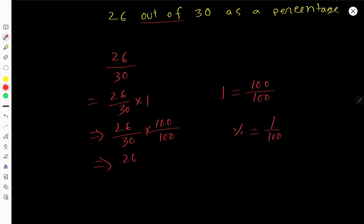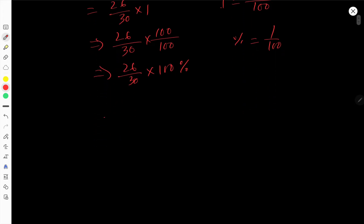So 26/30 times 100, and 1 over 100 means this percent sign.